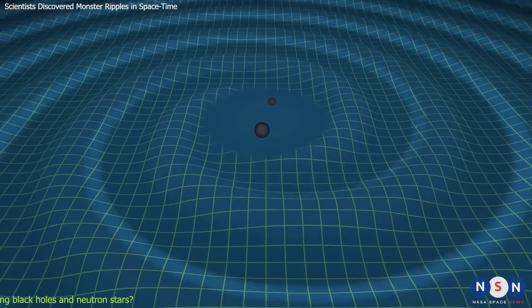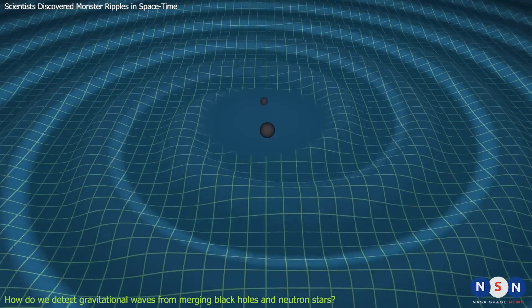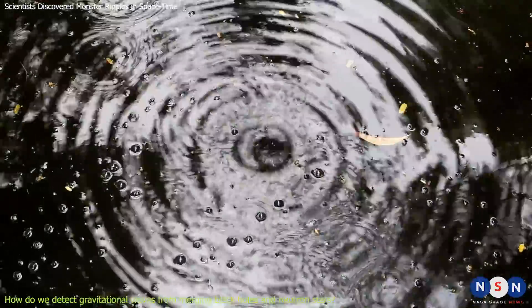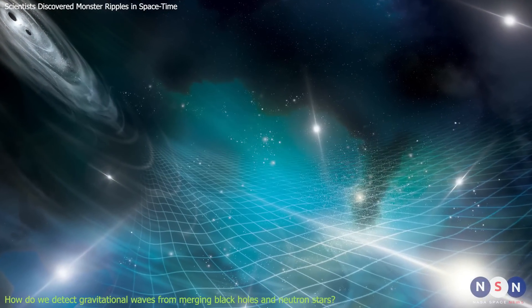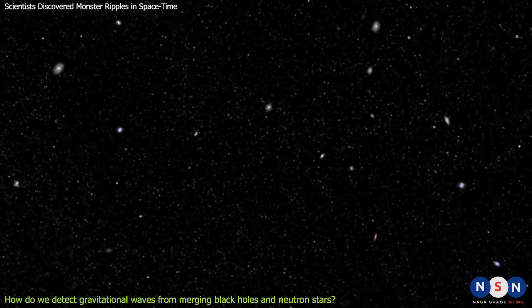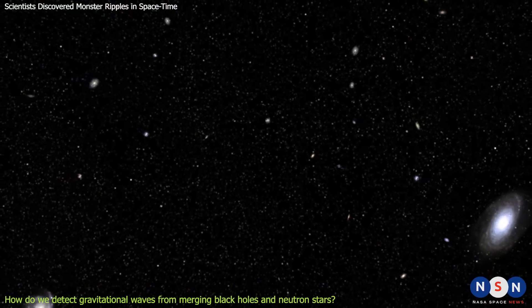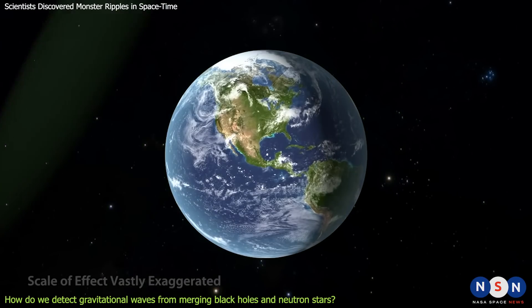Gravitational waves are disturbances in the curvature of space-time that are generated when massive objects accelerate. They are like ripples on a pond, but instead of water, they travel through the very fabric of reality. They carry information about the sources that produce them, such as their masses, spins, and distances. They also stretch and squeeze everything in their path, including us. But don't worry, the effect is so tiny that we don't feel it at all.